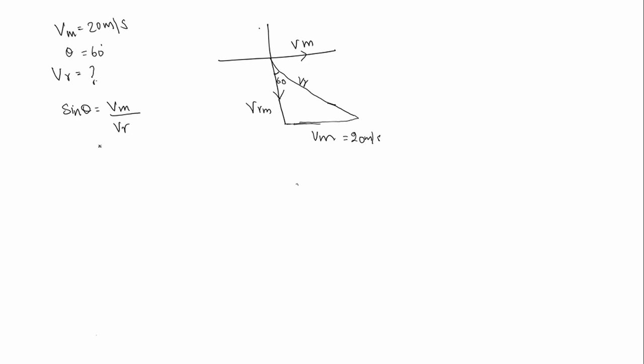We know theta is 60. Sin 60 is root 3 by 2. So velocity of man is 20 by velocity of rain. So velocity of rain is equal to 40 by root 3.